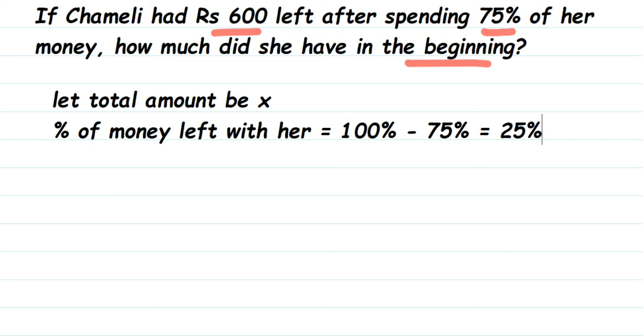So we're going to frame the equation here. So 25% of the total money - total money we don't know, we have taken a variable x here - so 25% of x is equal to rupees 600.